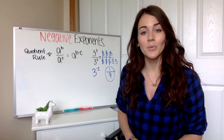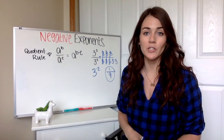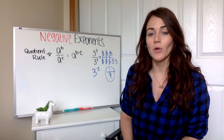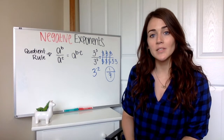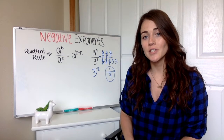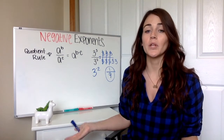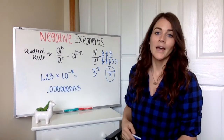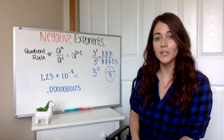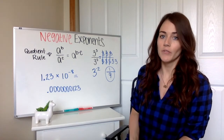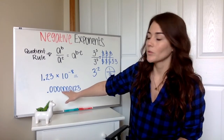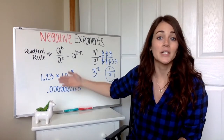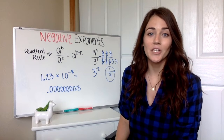Before we take a look at some examples of how to use this to simplify expressions, I want to make a point of why negative exponents matter — where we see them. If you watched my Intro to Exponents video, you know I talked about how one of the main uses of exponents is scientific notation, which is used to show either really, really big numbers or really, really small numbers. And negative exponents represent very, very small numbers. This number here, to write it in scientific notation, we write it as 1.23 times 10 to the negative 8. You can see where we use those negative exponents to express really, really small numbers.